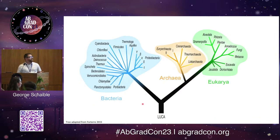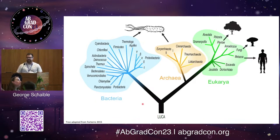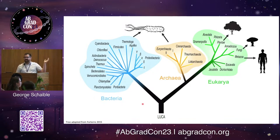If we look at our classic tree of life where we have different domains — the bacteria, the archaea, and the eukaryotes — generally we tend to think of all the multicellular life forms belonging to the eukarya, and we think of the bacteria and archaea as these simple single-celled organisms.